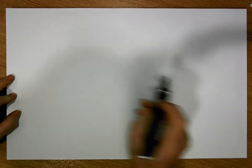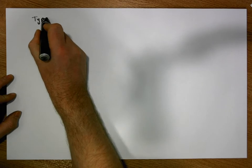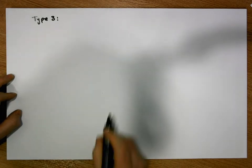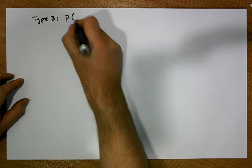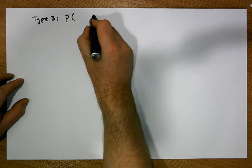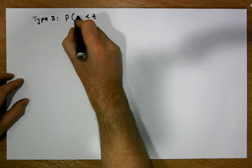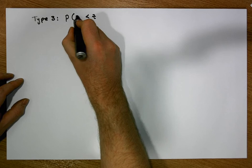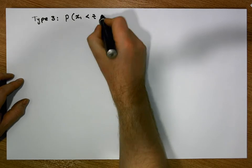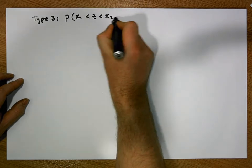Hi guys, this is Jonathan Lambert with the Mathematics Development and Support Service at the National College of Ireland. This short video is going to deal with what we have defined to be type 3 probabilities. They are probabilities where we are interested in calculating the probability that a z-score or z-value lies between two positive bounds, let's say x1 and x2.